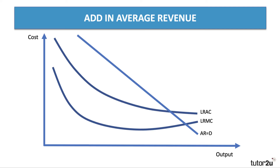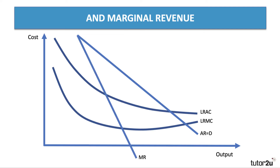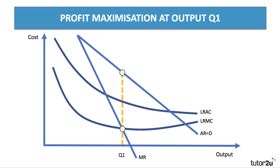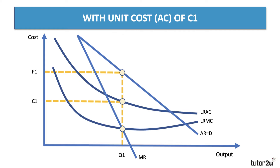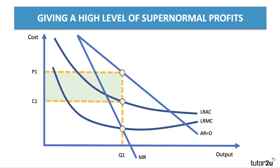Now let's add in an average revenue curve and a marginal revenue curve. Here's an industry where technological and cost advantages favour large-scale production. This firm could profit-maximise at output Q1, charging price P1, and potentially make large supernormal profits. There's the cost C1 — so at output Q1, the price is P1 and the unit cost is C1.